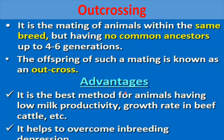The advantage of outcrossing is that it is the best method for animals having low milk productivity, growth rate in beef cattle, etc. It also helps to overcome inbreeding depression.